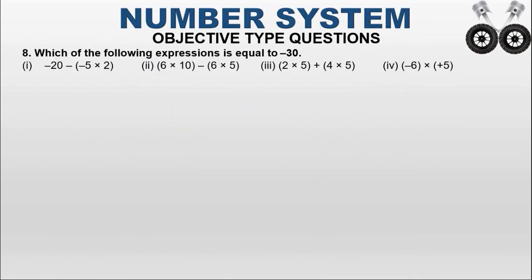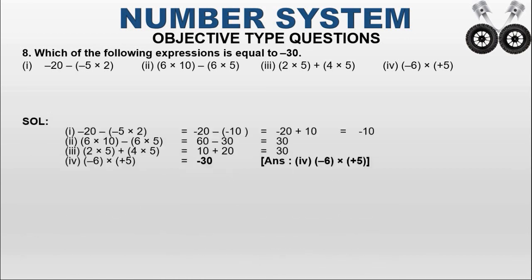Objective question 8: which expression equals minus 30? Option A: minus 20 minus (minus 5 into 2). Inside the bracket: minus 5 into 2 equals minus 10. Two minus operators together become plus: minus 20 plus 10. Different signs, subtract: 20 minus 10 equals 10, and since 20 is bigger and negative, the answer is minus 10.